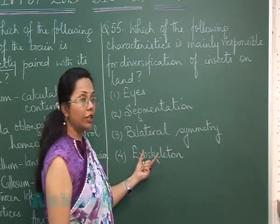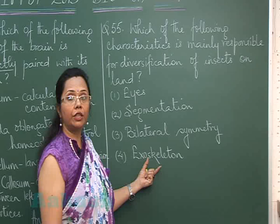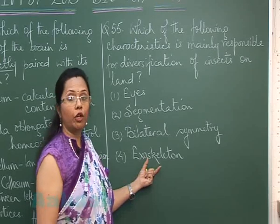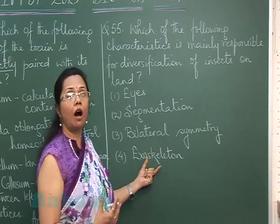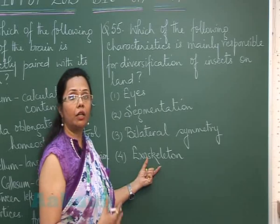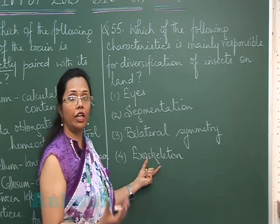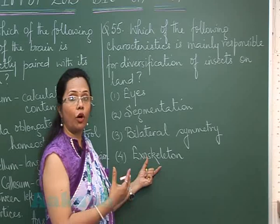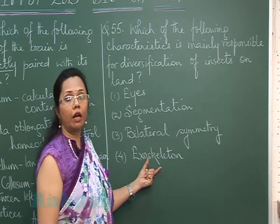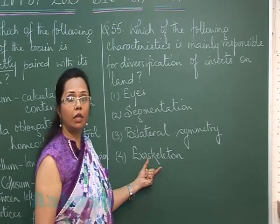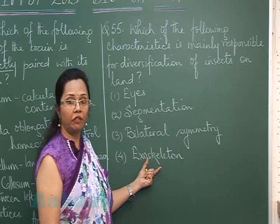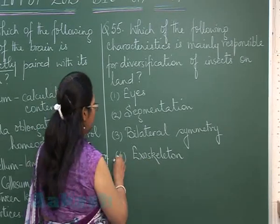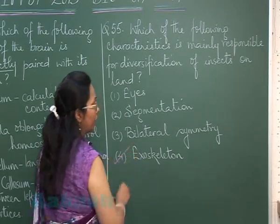Insects have been so successful on land because of their exoskeleton of chitin. This exoskeleton prevents water loss, because the terrestrial environment is very harsh and organisms face the danger of dehydration. Because of this exoskeleton they are able to conserve water and survive successfully on land. So the answer is exoskeleton.